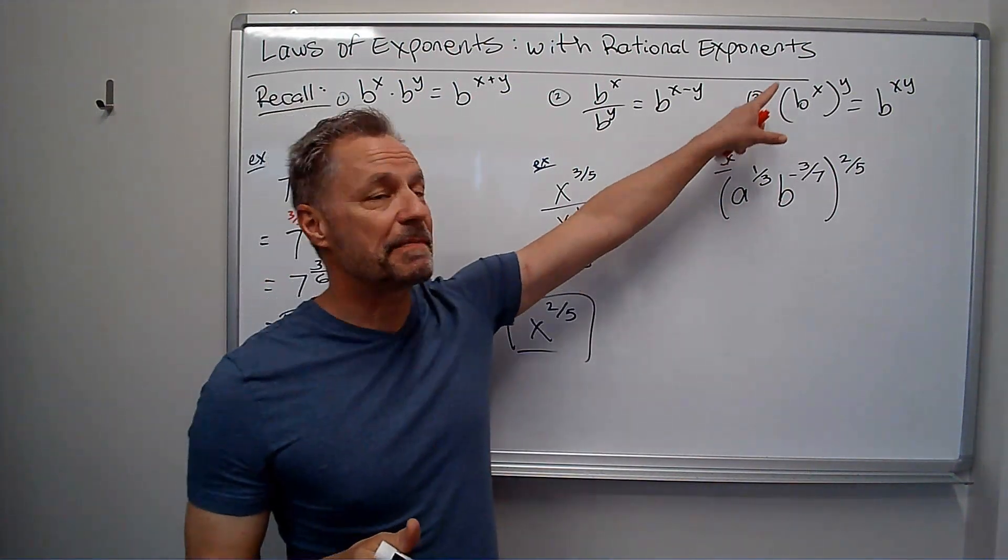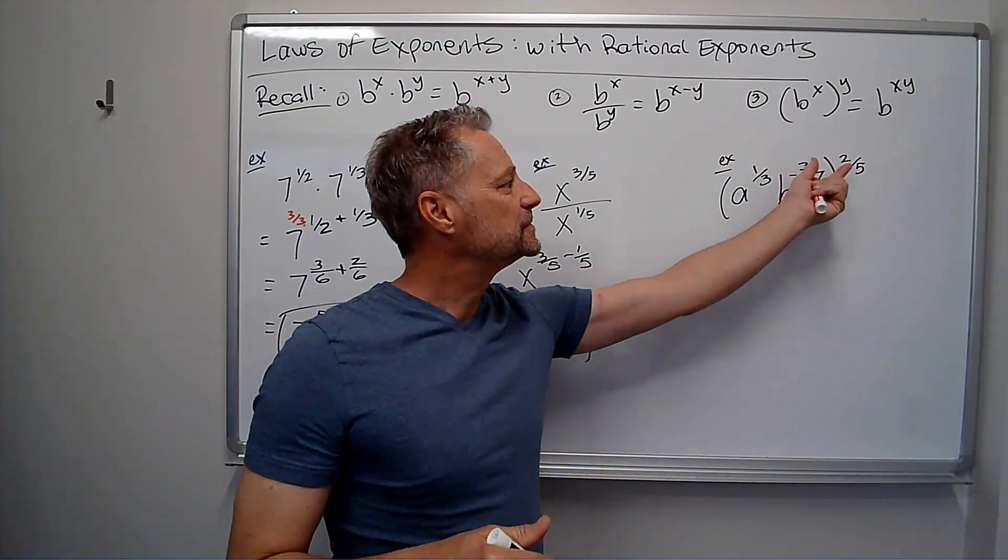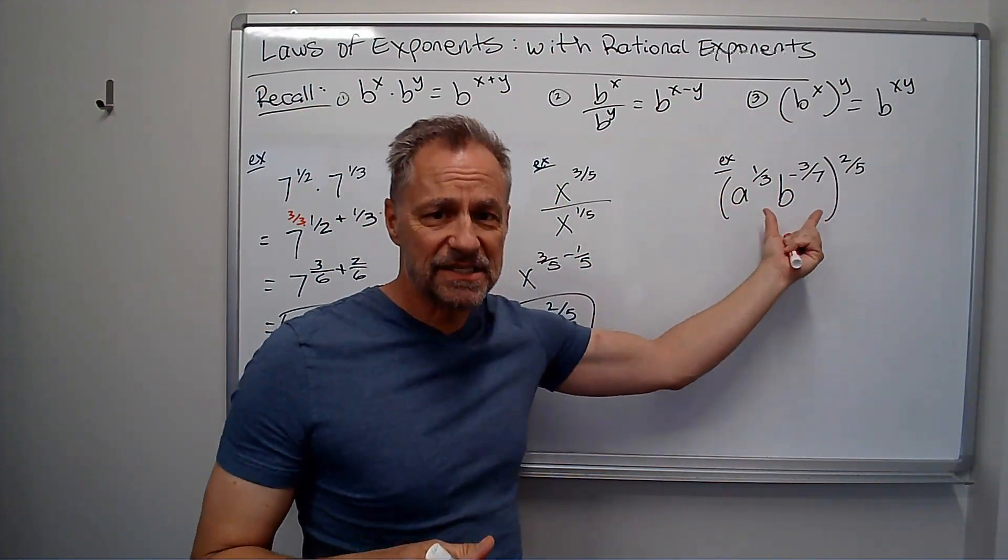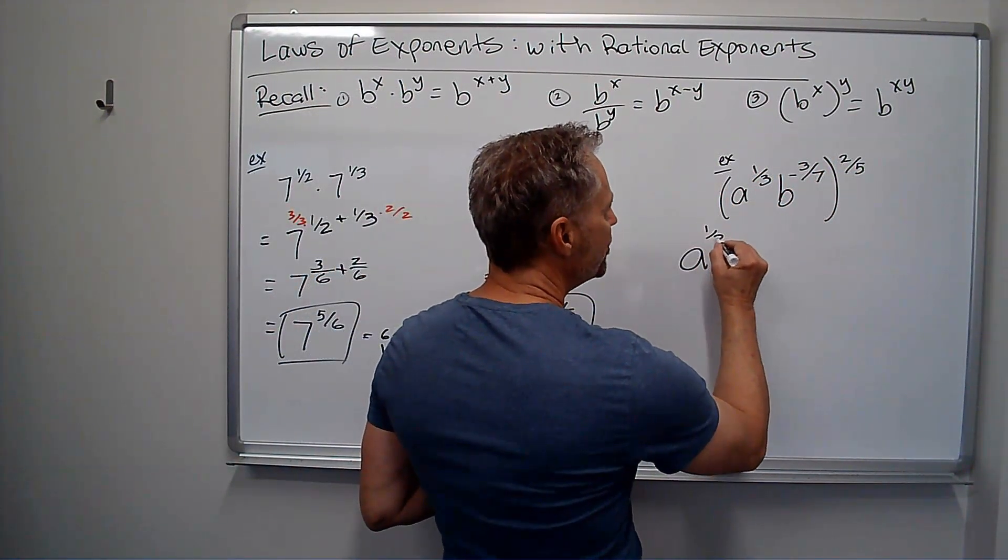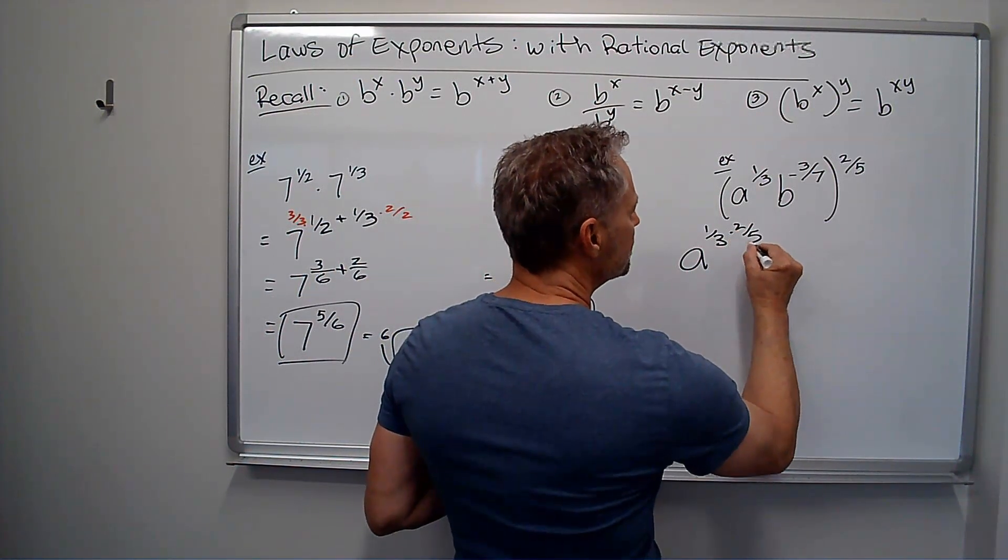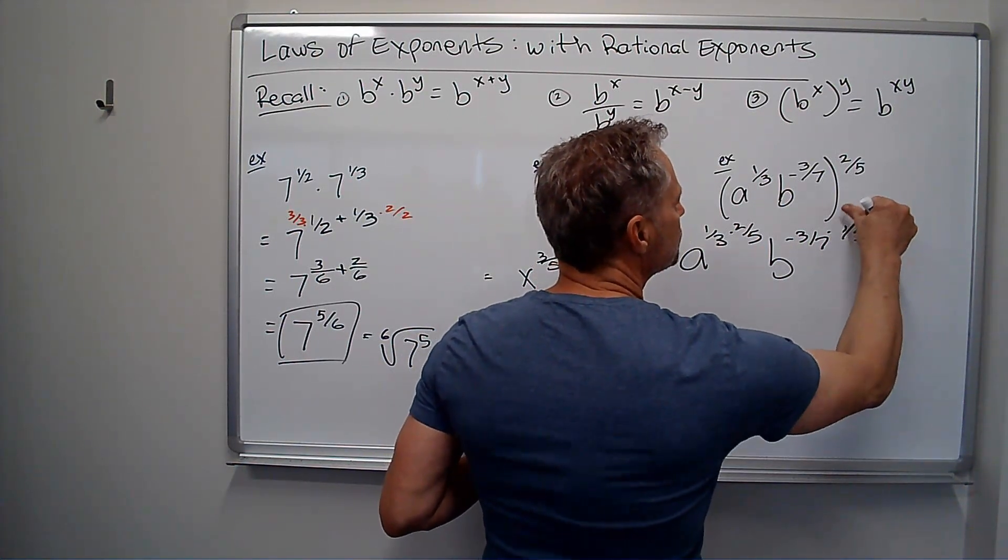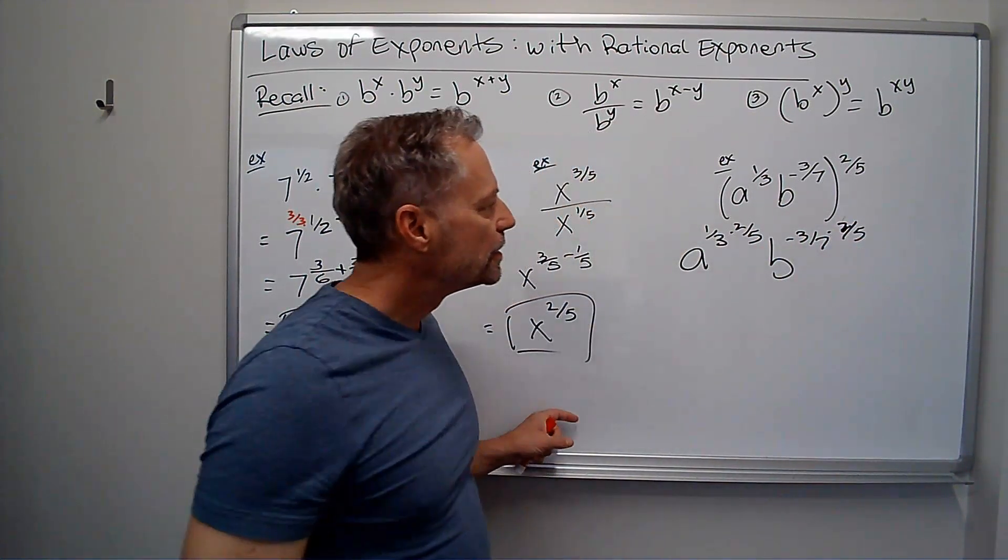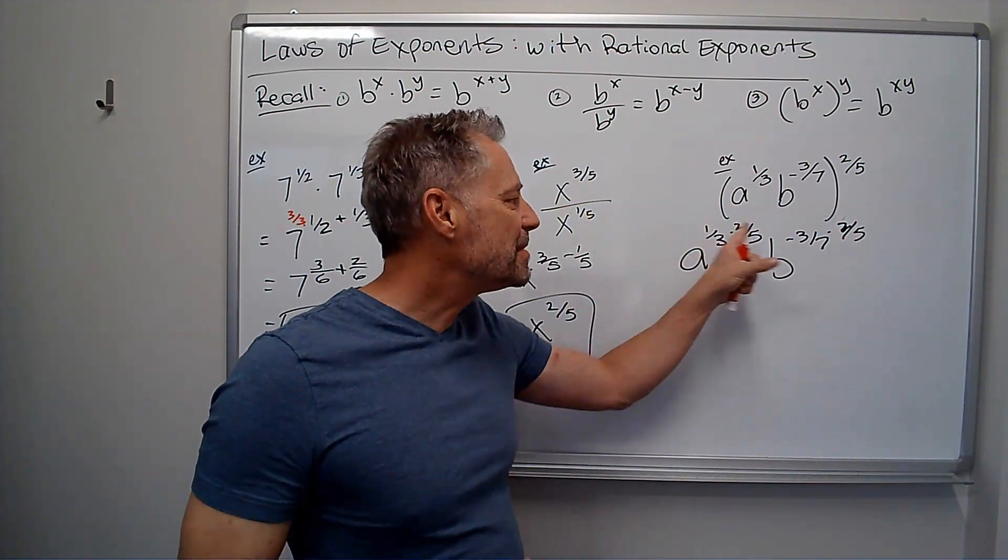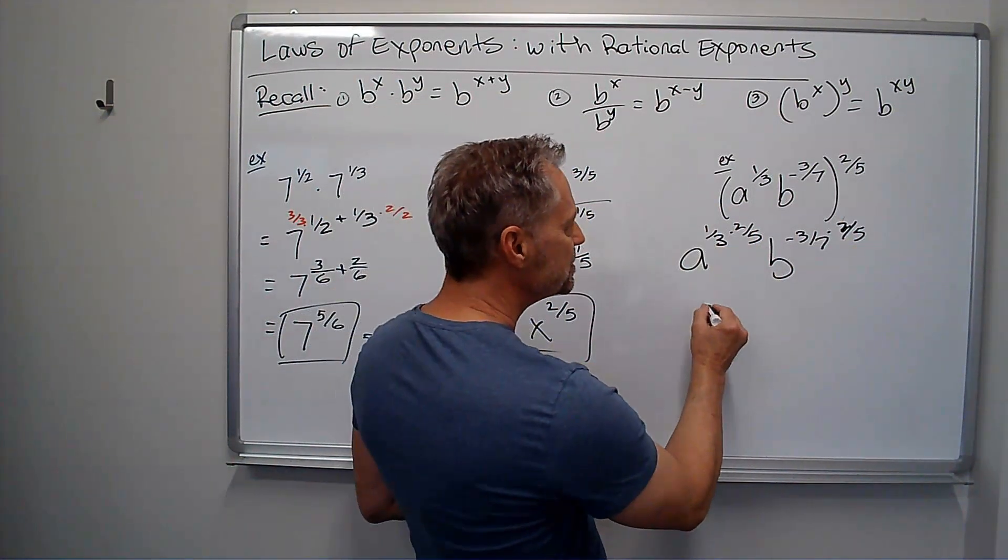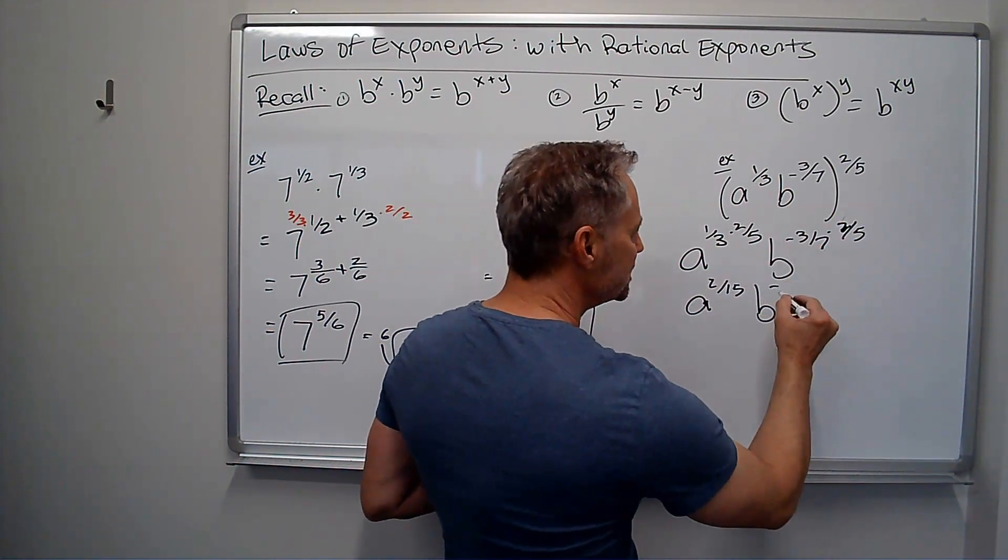And then one last one, it's the power to a power. Remember, I multiply exponents. So I'm essentially going to bring this 2, this is going to be raised to the 2 fifths. This is going to be raised to the 2 fifths, but by multiplying exponents. So it's going to come out as a to the 1 third times 2 fifths. And b to the negative 3 sevenths times 2 fifths. I noticed I said 2 fifths and wrote 5 fifths. But 2 fifths, and then remember, I just multiply straight across with my fractions. This is going to be a to the 2 fifteenths. This is going to be b to the negative 6 thirty-fifths.